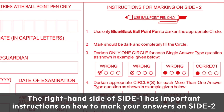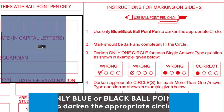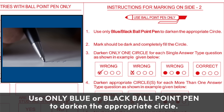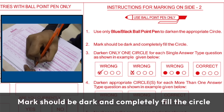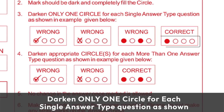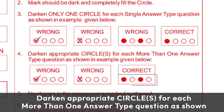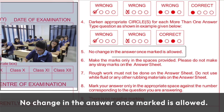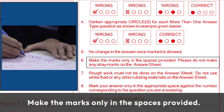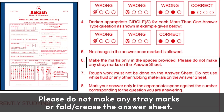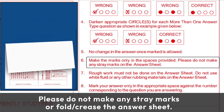The right-hand side of side 1 has important instructions on how to mark your answers on side 2. Use only blue or black ballpoint pen to darken the appropriate circle. The mark should be dark and completely fill the circle. Darken only one circle for each single answer type question, and darken appropriate circles for each more-than-one answer type question as shown. Make marks only in the spaces provided.